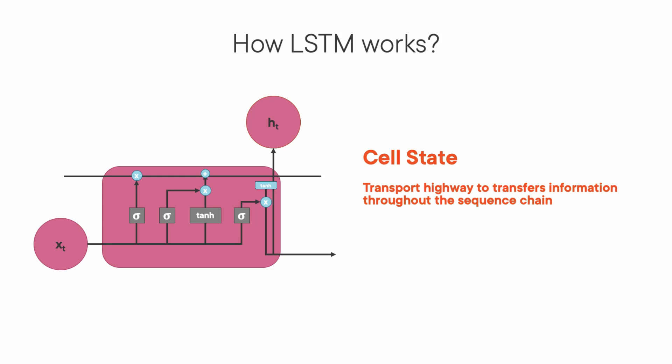As the cell state goes on its journey, information gets added or removed via the gates. The gates are different neural networks that decide which information is allowed on the cell state. The gates can learn what information is relevant to keep or forget during training. We have three different gates that regulate information flow in an LSTM cell.